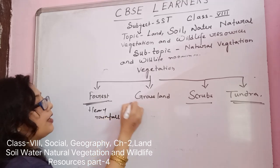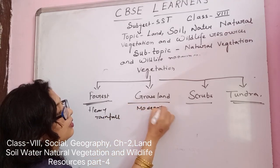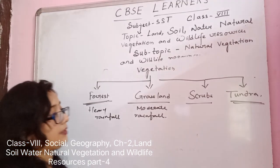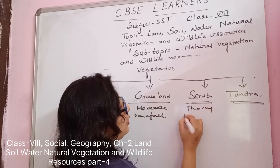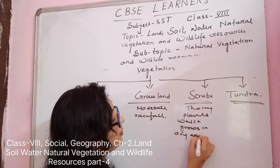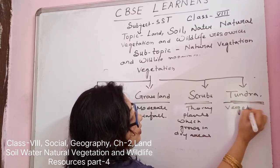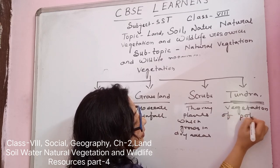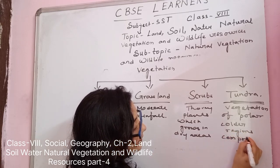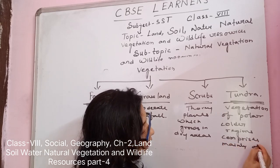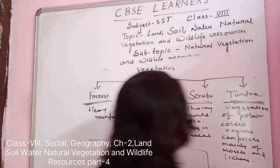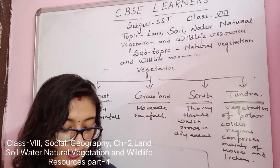To summarize: vegetation classification — forest grows in regions of heavy rainfall; grassland has short shrubs and plants growing in regions of moderate rainfall; scrubs are thorny plants growing in dry areas; and tundra is the vegetation of cold polar regions, comprising mainly of mosses and lichens.